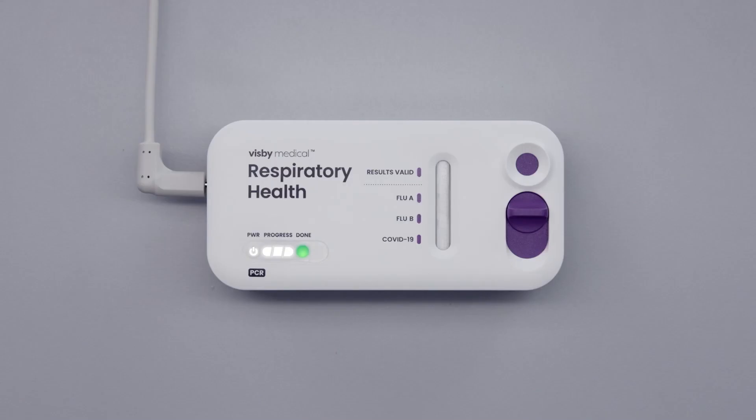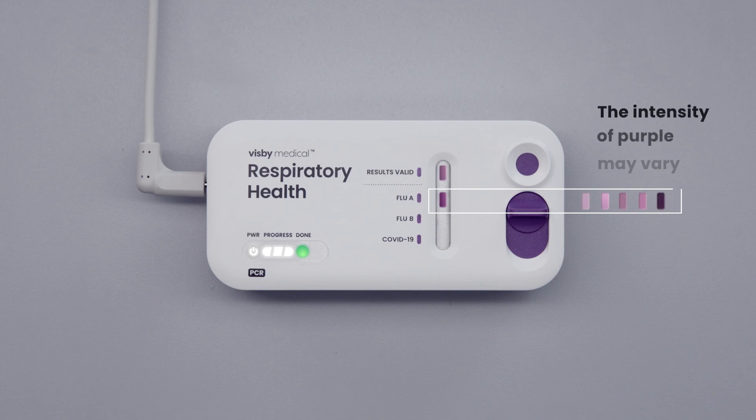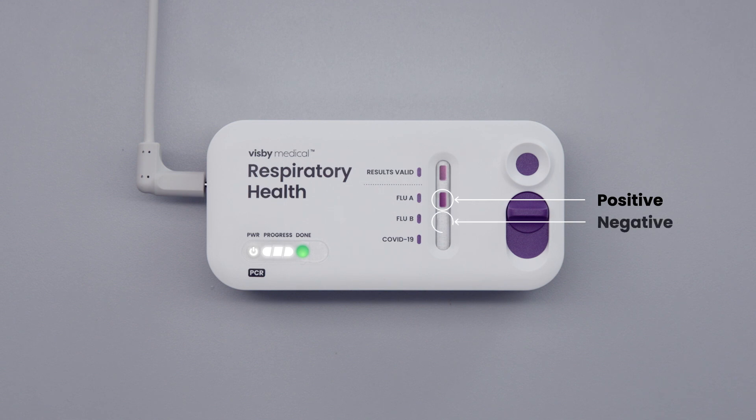Once the test is complete, a purple spot next to results valid indicates the test is valid. If the test is valid, any shade of purple with distinct edges is considered a spot. The intensity of purple may vary. For this example, the sample is positive for flu A and negative for both flu B and COVID-19.